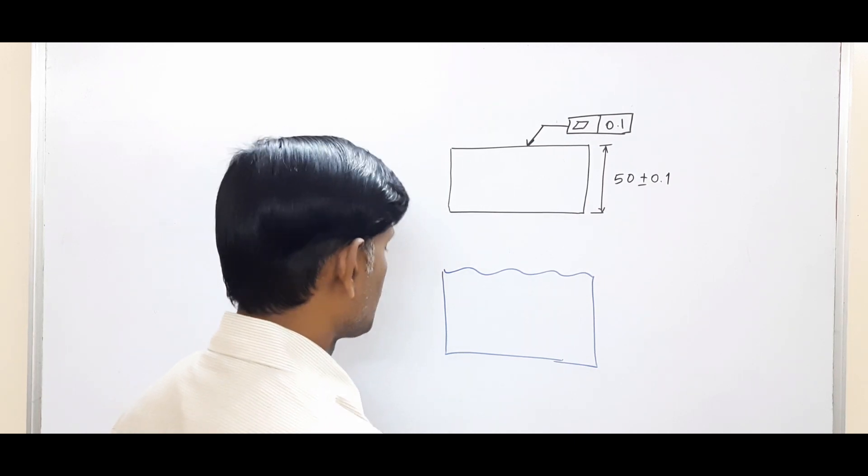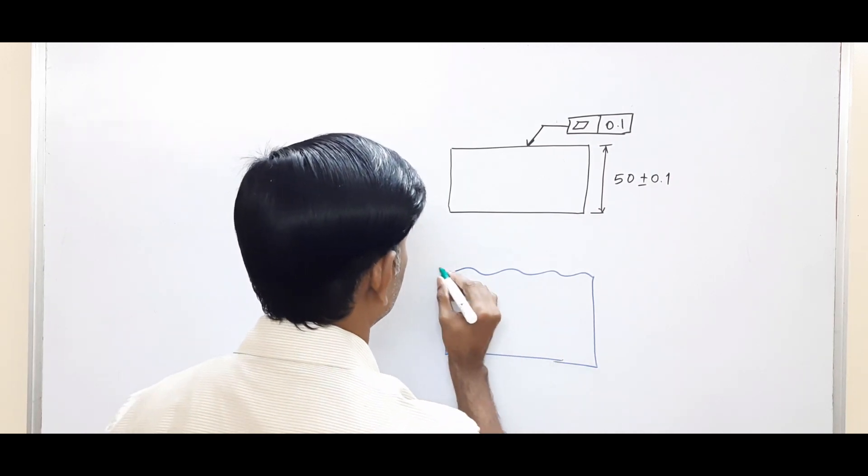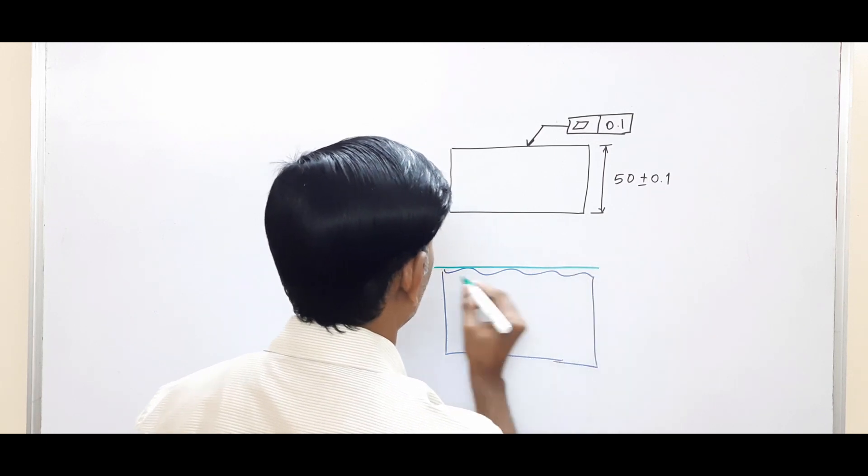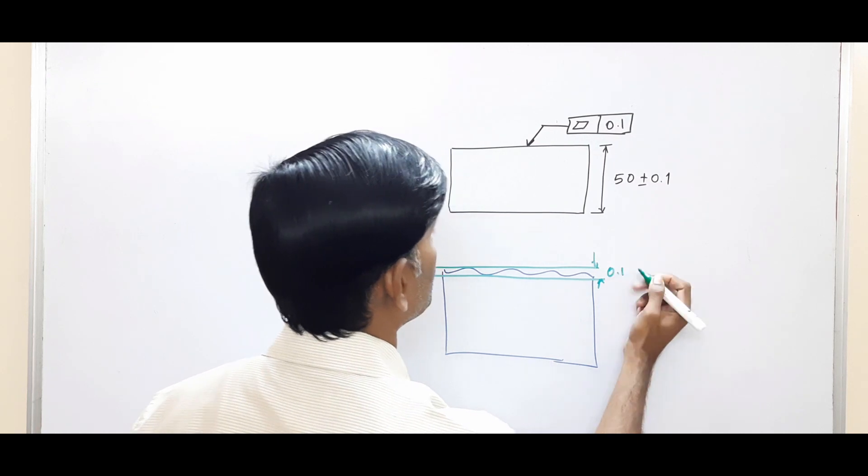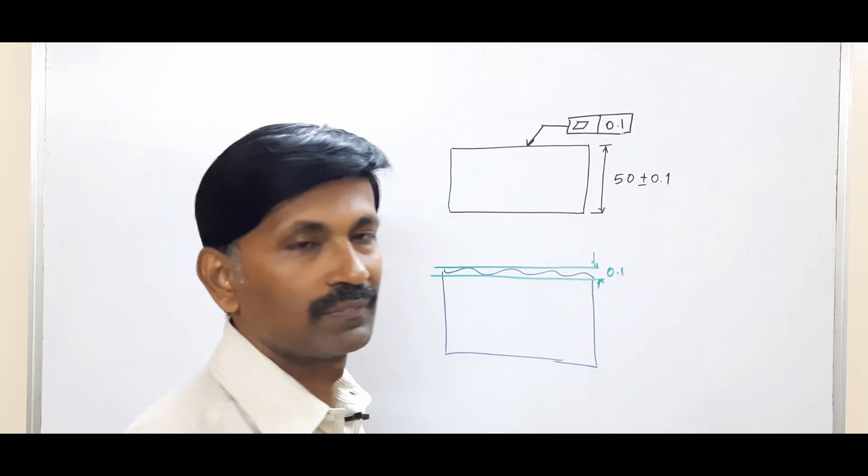Now if you join all the peaks and if you join all the valleys, the height difference should not be more than 0.1, which is the flatness control.